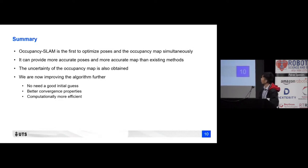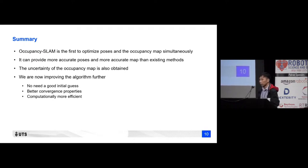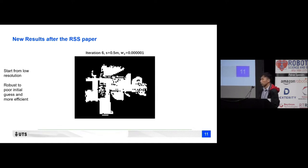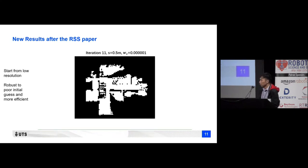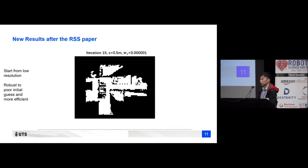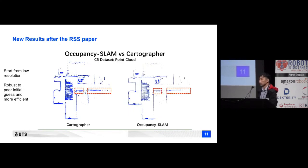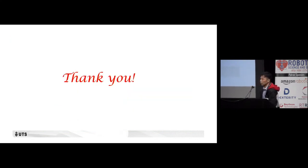Results on the museum dataset show that Occupancy SLAM gets a better result than Cartographer. The convergence process shows the weight changing after some iterations until the algorithm converges to a good map. We start from a very low resolution map and after some iterations converge to a reasonable result, then switch to a high-resolution map, significantly reducing computational complexity. In summary, Occupancy SLAM is the first to simultaneously optimize poses and the occupancy grid map, outperforms existing methods, and the uncertainty of the map can also be obtained. We are continuing to improve robustness and computational efficiency.